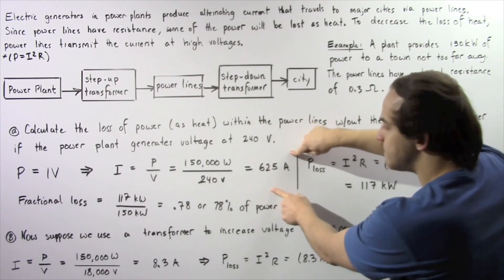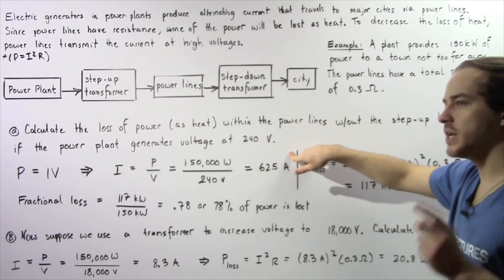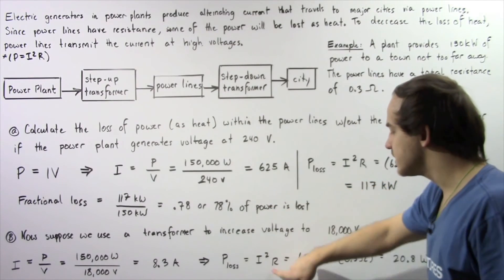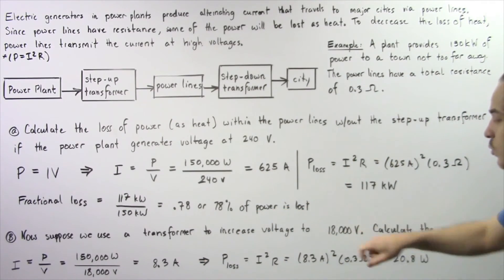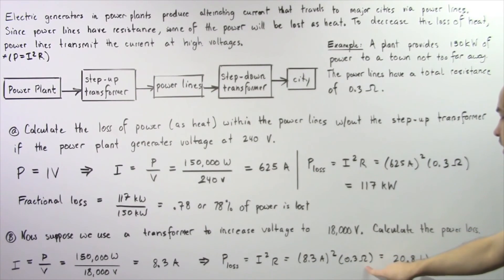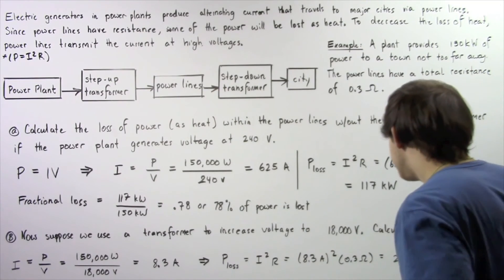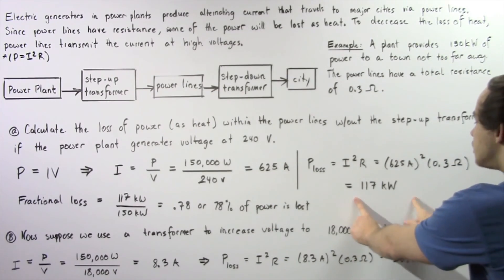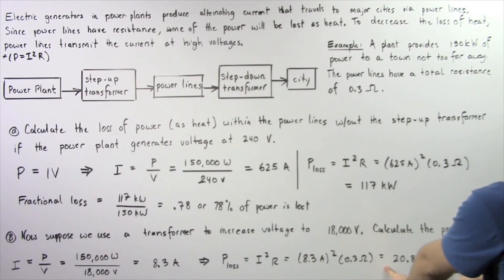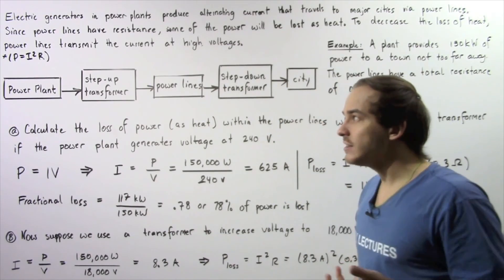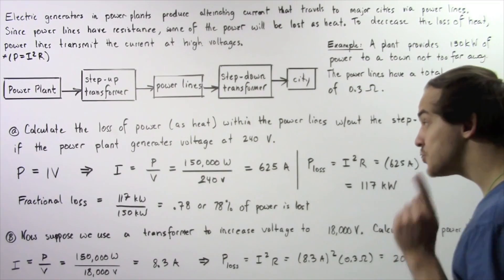Before, we had an electric current of 625 amps; now we have only 8.3 amps. Applying the power loss equation, P_loss = I² × R, where I is 8.3 amps and R is still 0.3 ohms, we get about 20.8 watts. Taking this quantity and dividing by 150,000 watts gives a fractional loss of about 0.01% — much less than the 78% loss without the transformer. This demonstrates the critical advantage of transmitting power at high voltages.